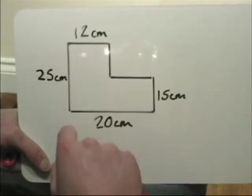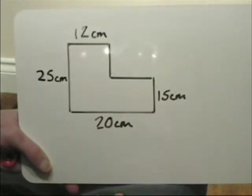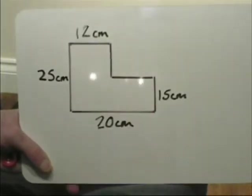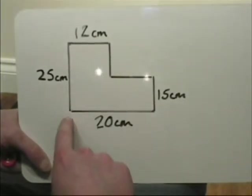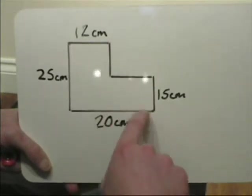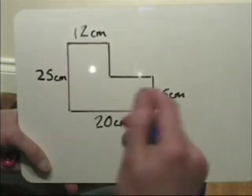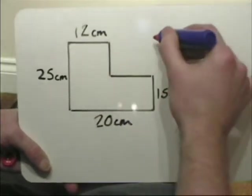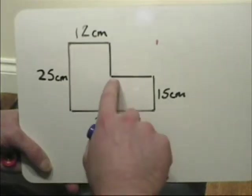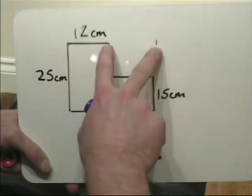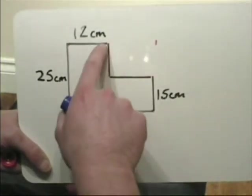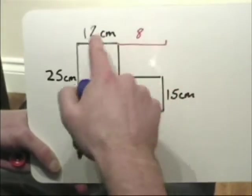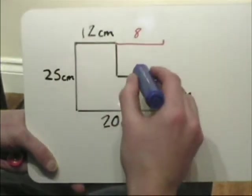Here, to work out this line here, what I need to do is compare this 20 centimeter line to this 12 centimeter line. And if I know that 20 centimeters ends there, I can see that there is a difference from there to there of 8 centimeters, because 8 plus 12 is 20. So that line there is 8 centimeters.